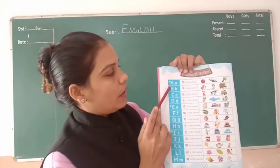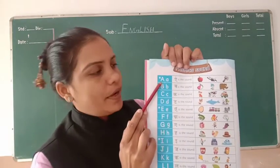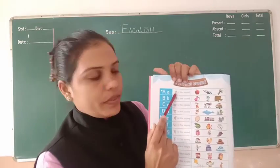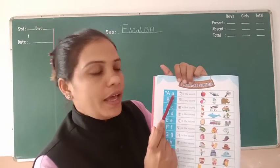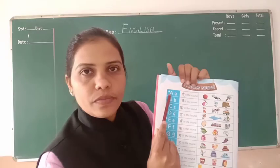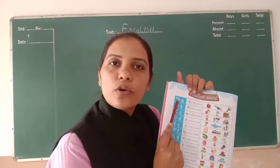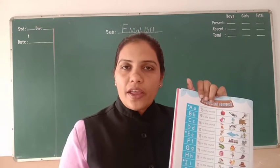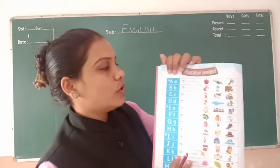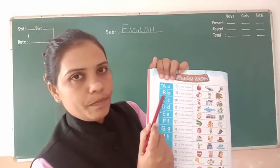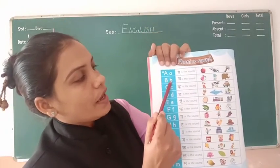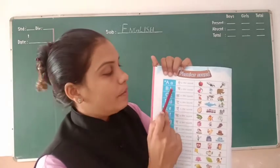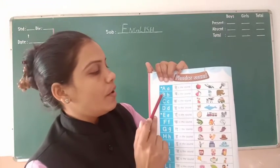Letter A — okay, so here capital letter A and small letter A. So uska sound kya hai — A. Capital letter A, small letter A, and A is the sound for A. Humne bahut saare videos mein aapko aise bola bhi hai ke A — when we speak, at that time we can speak A, but its sound is A. So in this way you have to practice. Then letter B — capital and small, dono hain here. B ka sound hai — Ba. Ba is the sound for B.